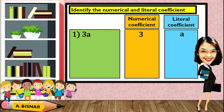It's very easy, right? For number two, b minus 4c. You might think the only numerical coefficient is 4. However, b means 1b — it is not 0b, it is 1b. But since that is 1, we don't need to write it. Which means the numerical coefficients here are 1 and negative 4, and the literal coefficients will be b and c.